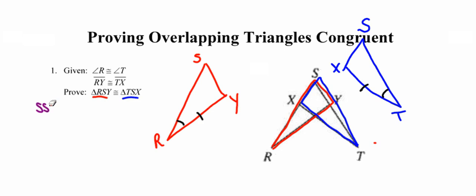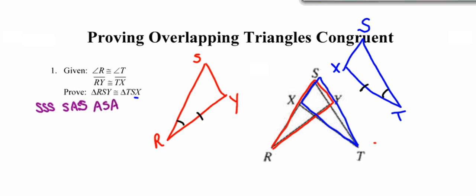We're going to focus on our five methods of proving triangles congruent. Looking at my red and blue triangles, I've got one pair of congruent angles and one pair of congruent sides. There are no vertical angles and no shared sides from the picture. But what is new and different this time is that I have a pair of angles that overlap — these angles up at the top at point S. Angle S in the blue triangle is congruent to angle S in the red triangle.